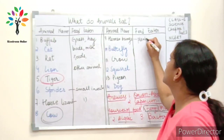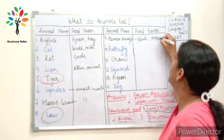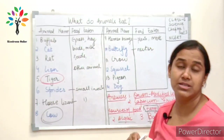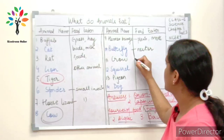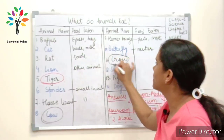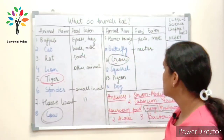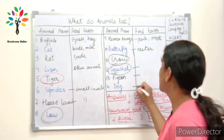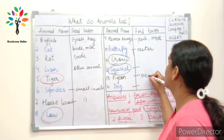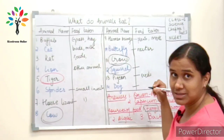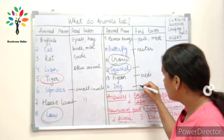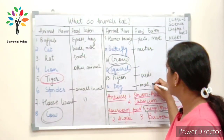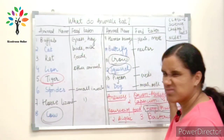Butterfly eats nectar from flowers. Crow — you have to tell me. Squirrel — you have to tell me. Pigeon eats seeds like corn and maize. Dog likes to eat meat and sometimes likes to drink milk.